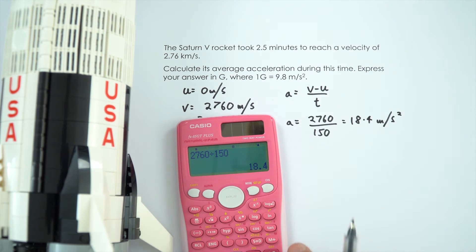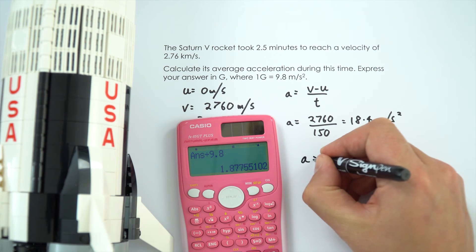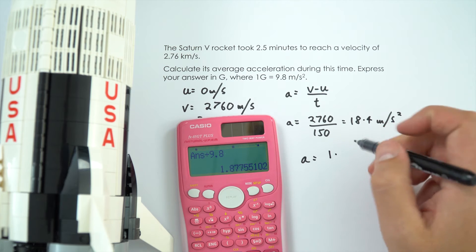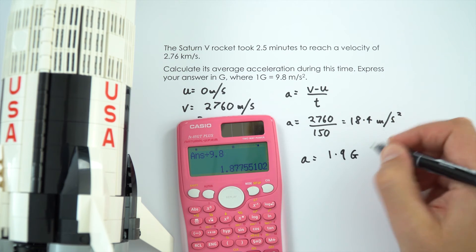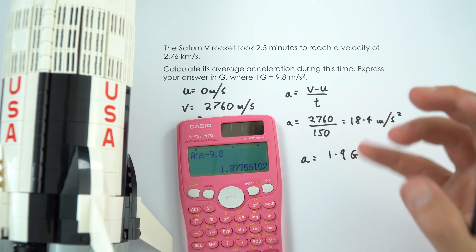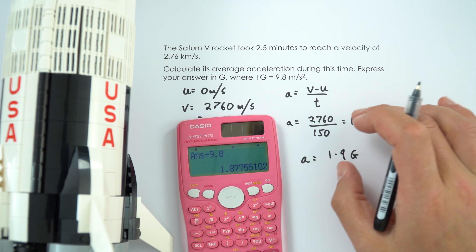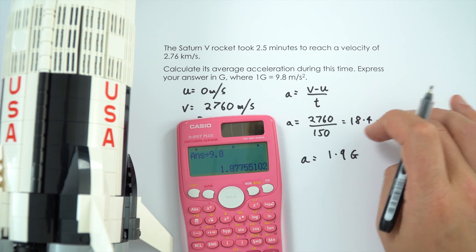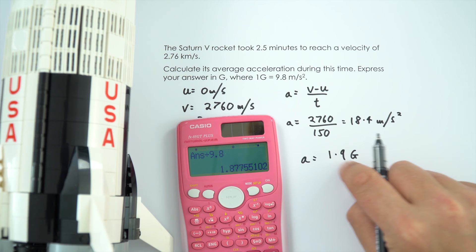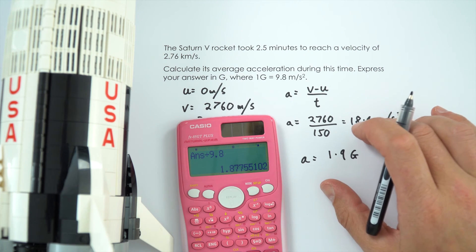So to give an answer in g I'm going to divide the acceleration by 9.8 and this then gives an acceleration equal to 1.9g and this is something that you often hear about people talking about the g-force or the amount of g's that somebody experiences and effectively 1g is just our normal acceleration due to gravity so this is almost twice the normal acceleration due to gravity, so pretty big forces on the astronauts involved.